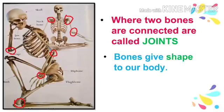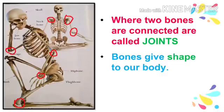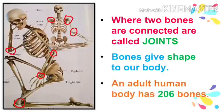Bones give shape to our body. An adult human body has 206 bones. Did you know that when you were a small baby, you had more bones? But as you grew up, some bones fused together.